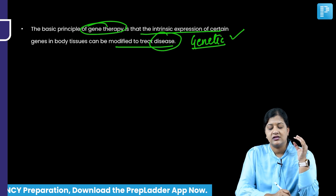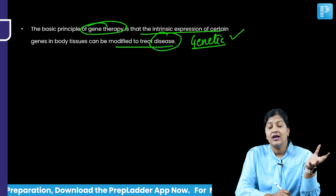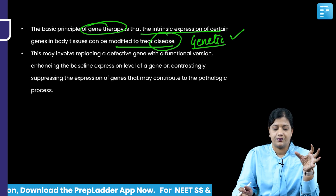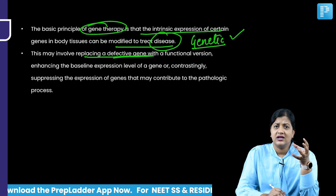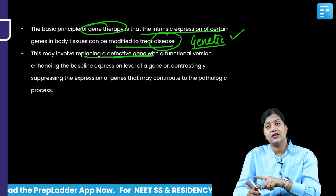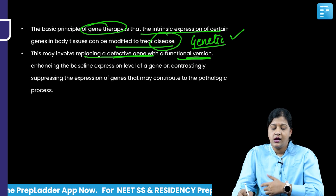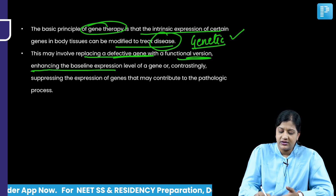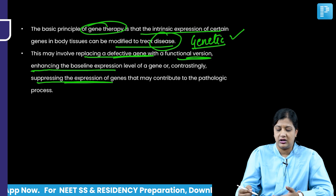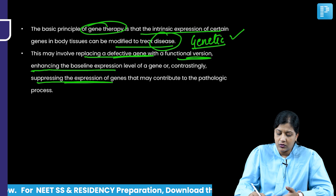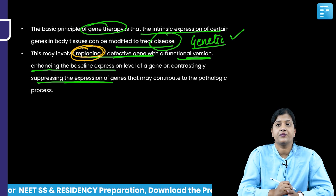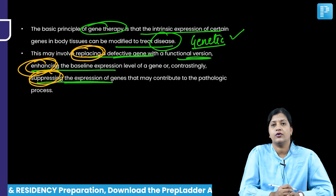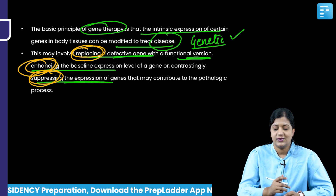The basic principle of gene therapy is to modify the expression of the gene responsible for causing a genetic disease. We can replace a defective gene with a functional one, increase the baseline expression if it is reduced, or suppress expression if it is abnormally high. So these three approaches — replacing, enhancing, or suppressing gene expression — are how gene therapy is used to treat genetic diseases.